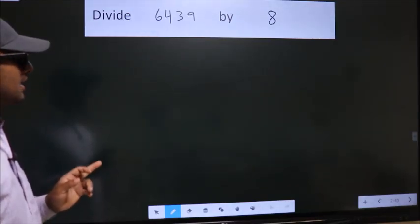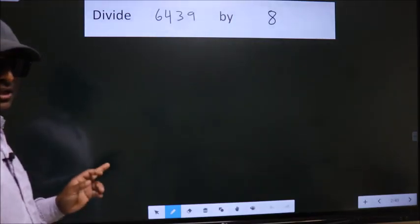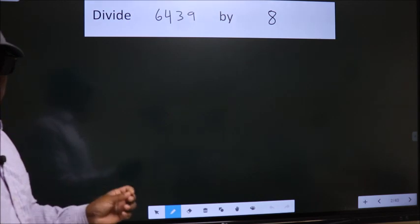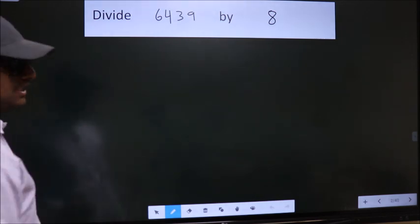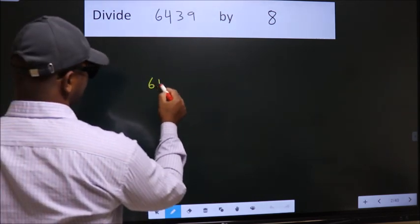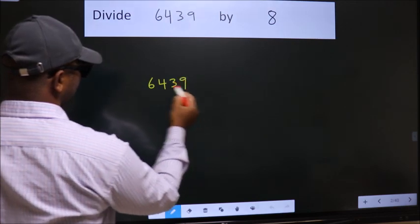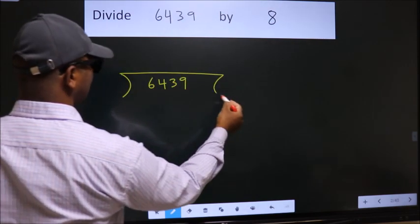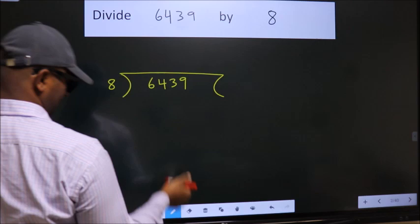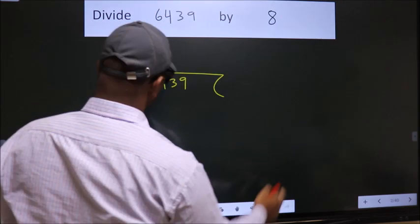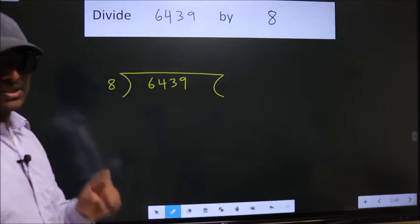Divide 6439 by 8. To do this division, we should frame it in this way. 6439 here, 8 here. This is your step 1.